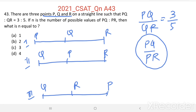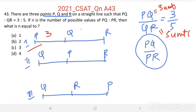Let us take PQ equal to 3 units and QR equal to 5 units. Then PQ by QR equals 3 by 5. In the first arrangement, PQ equals 3 units and QR equals 5 units. This arrangement is possible.